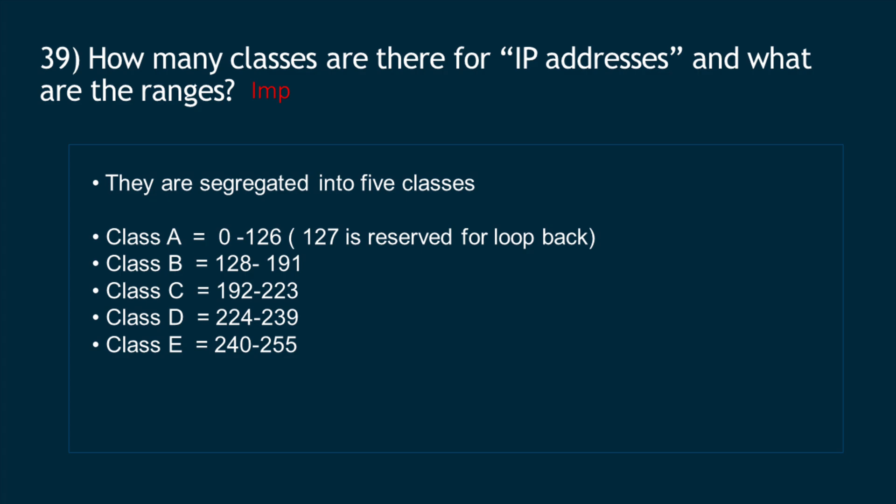Question 39: How many classes are there for IP addresses and what are the ranges? They are segregated into five classes: Class A = 0–126 (127 is reserved for loopback), Class B = 128–191, Class C = 192–223, Class D = 224–239, Class E = 240–255.